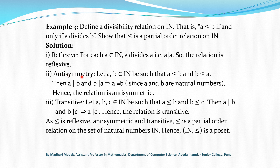For antisymmetry, we take two natural numbers A and B such that A precedes B and B precedes A. By definition of the relation, A divides B and B divides A, so A and B are equal. Here A and B are natural numbers, so if A divides B and B divides A, then they are equal.